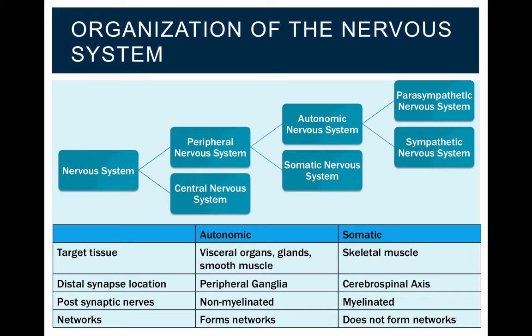Whereas the somatic nervous system primarily innervates skeletal muscle, the distal synapses are located in the cerebral spinal axis, somatic neurons are myelinated, and they do not form networks.